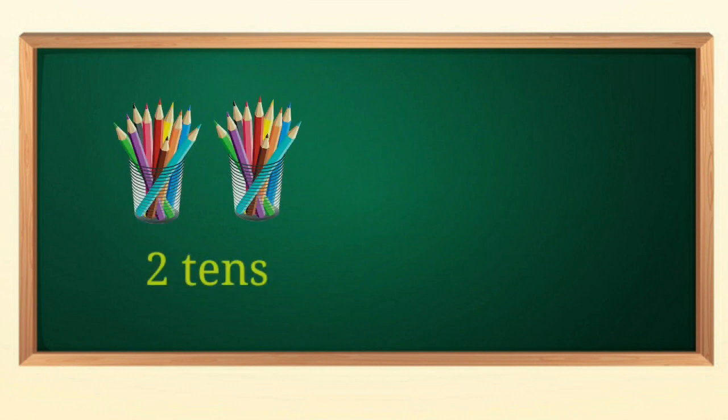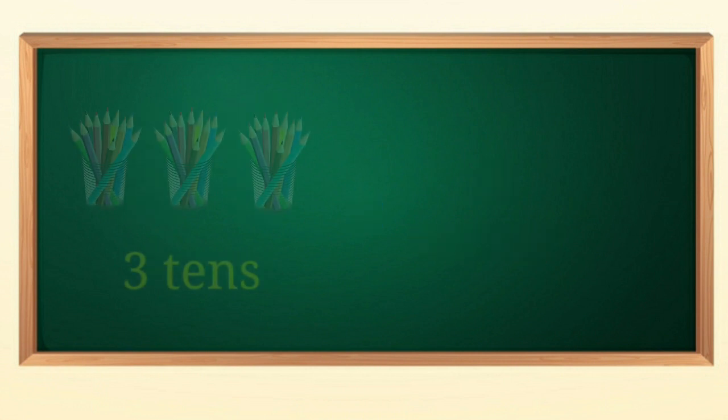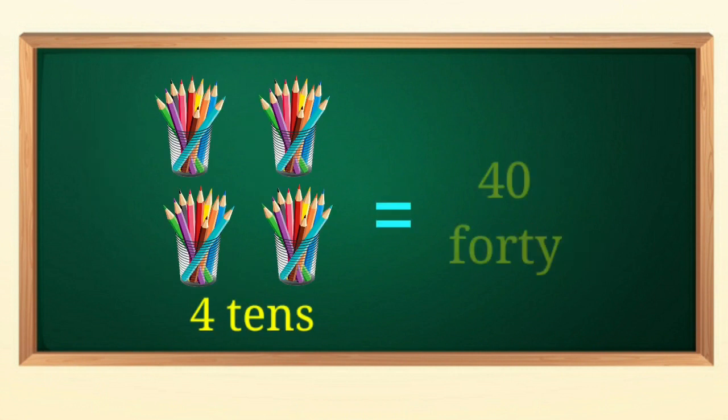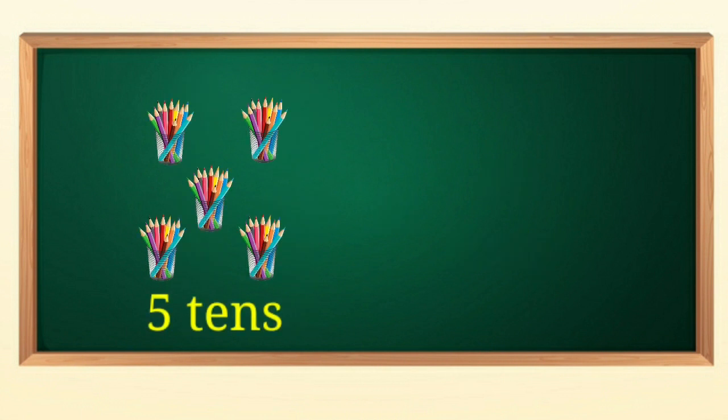Children, now look, there are two groups of tens. So, two tens color pencils means twenty color pencils. Three tens means thirty color pencils. Four tens means forty color pencils. And five tens means fifty color pencils.